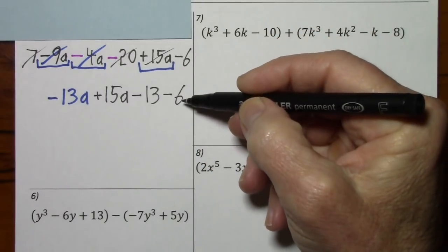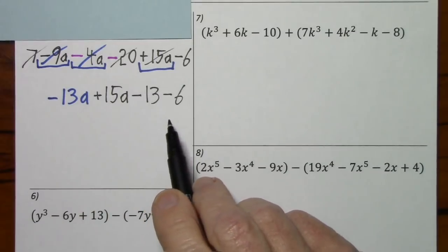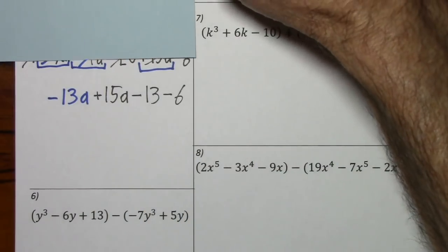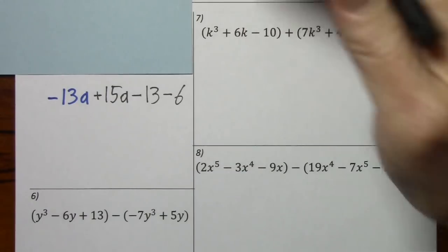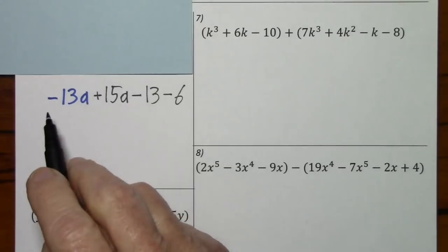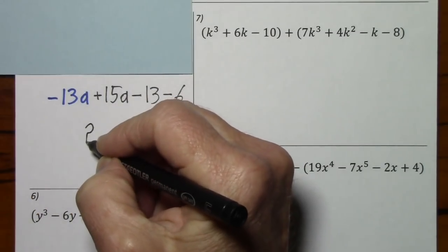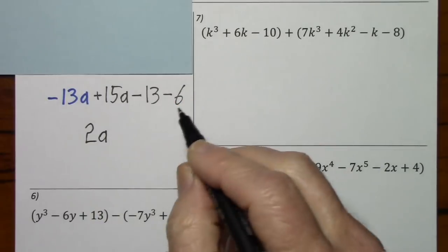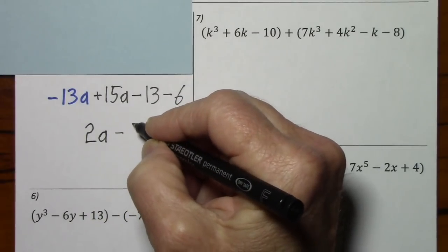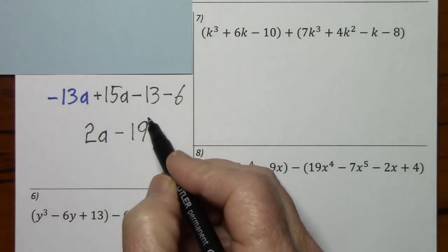You don't have to proceed the way I just did — it just seemed like a way to be safe and keep up with everything. I like to bring down what I'm not using because now I can just focus on this line. So negative 13a, positive 15a, negative 13, negative 6. And here's our simplified polynomial.